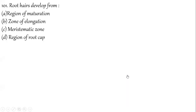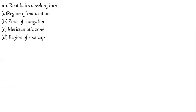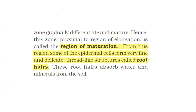Question 101: Root hairs develop from which region? The root has five major parts, and root hairs arise from the topmost portion. The correct answer is option A — the region of maturation. From this region, some epidermal cells arise to form root hairs.